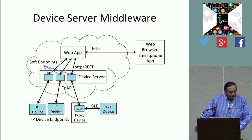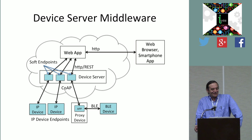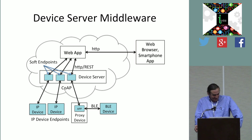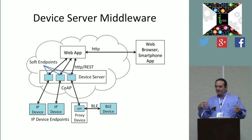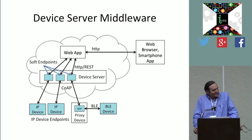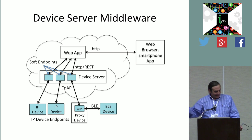The data model is something the server needs to communicate between the app and the devices, but the server itself doesn't really need to interpret the data models. The design pattern I've been focusing on is one where the device server can be agnostic of the application, but still cache the metadata and the data model as well as the data.